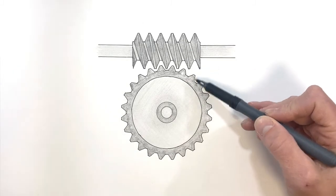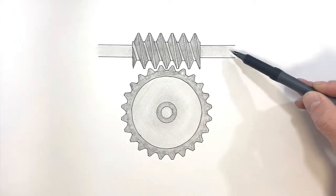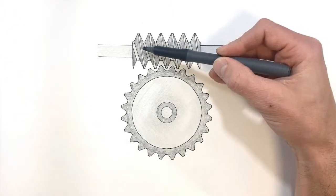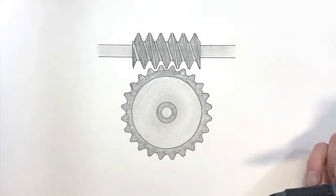All right, today we're going to talk about worm gears. What we have here is a worm gear assembly where we have an input shaft hooked to what looks like a screw turning a gear on an output shaft.